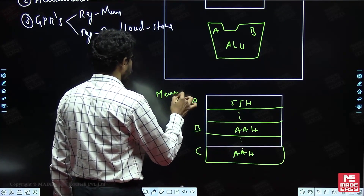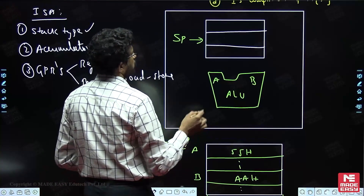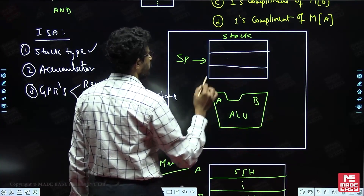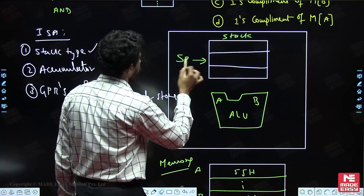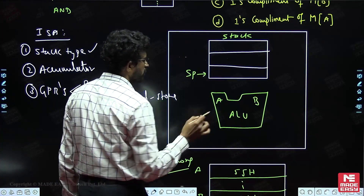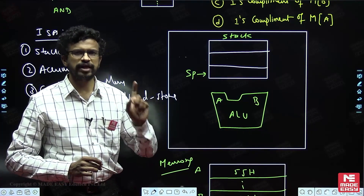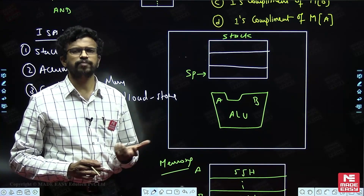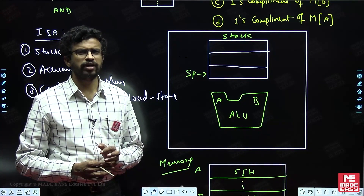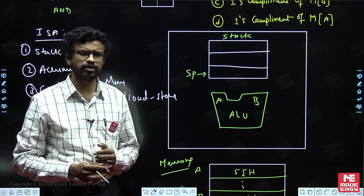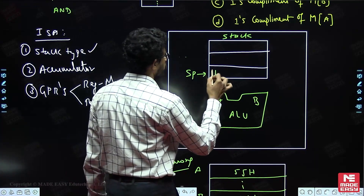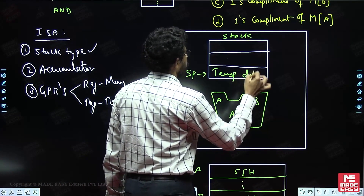From the external memory, this data should be brought into the processor. The stack is inside the processor. The stack pointer initially points to some existing data at the top of the stack. Stack is a part of memory used to store temporary data and the value of the program counter when subroutines are used.